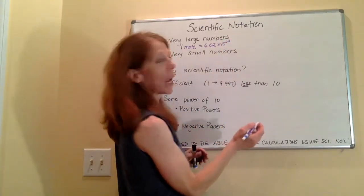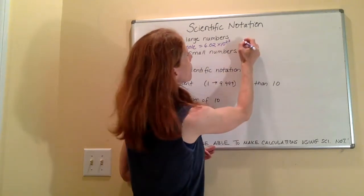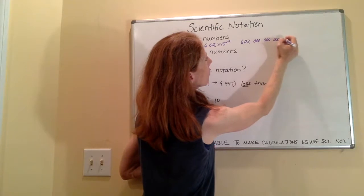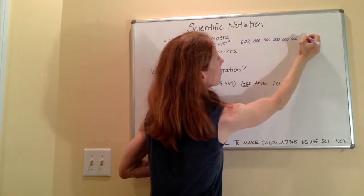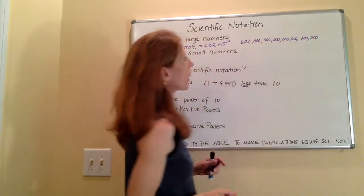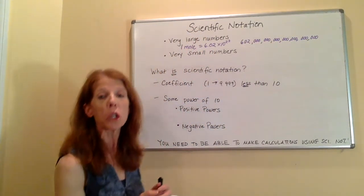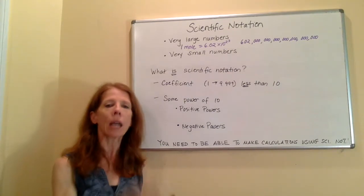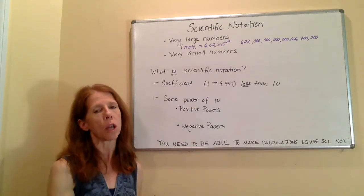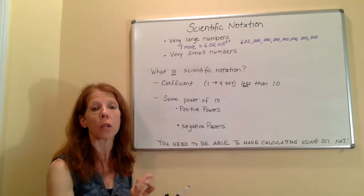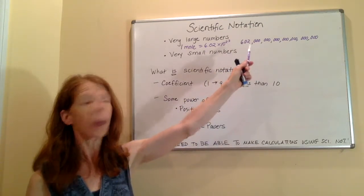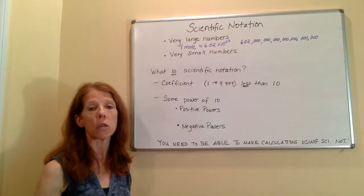Okay, now if I write that out longhand, it looks like this. 6.02 times 10 to the 23rd. That's one mole. And it's a counting number, just like a dozen is 12. It doesn't have units associated with it. But that's a number you're going to use all the time. Now, I don't know about you, but I have no interest in typing that into my calculator. Therefore, we use scientific notation. It's much easier to use.